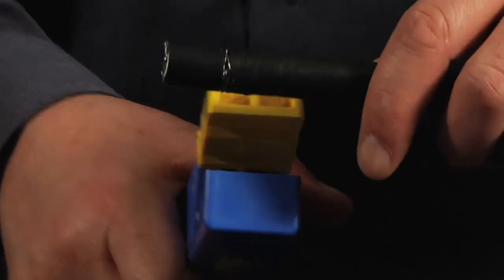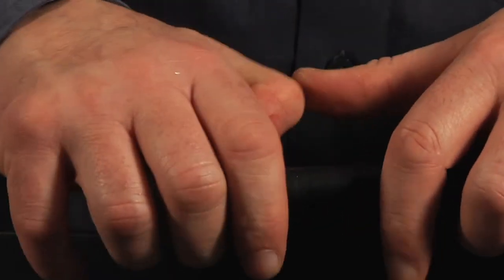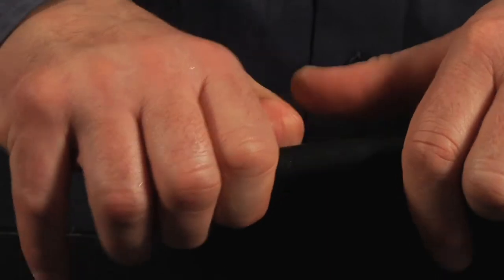For large cables squeeze the handles together to open the tool and remove it from the cable. Manually pull the jacket and dielectric from the cable.